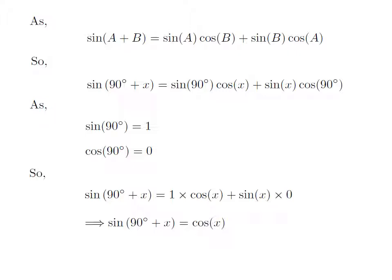So, the value of sine of 90 degree plus x is equal to cosine of x.